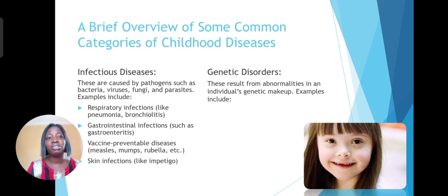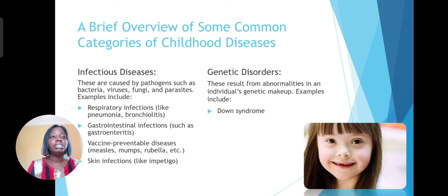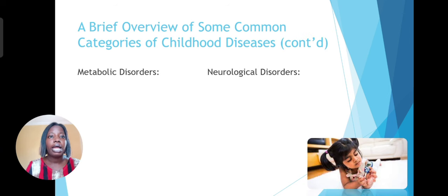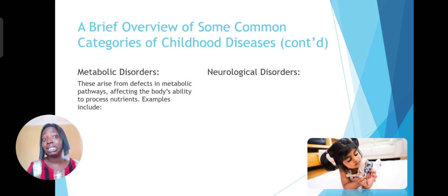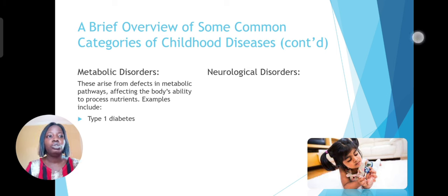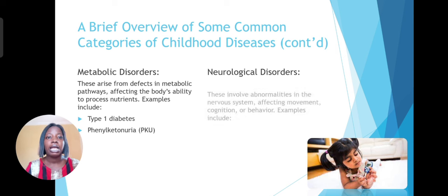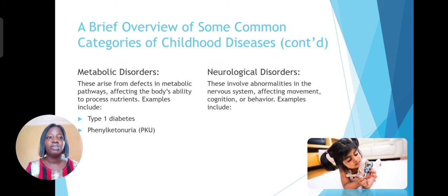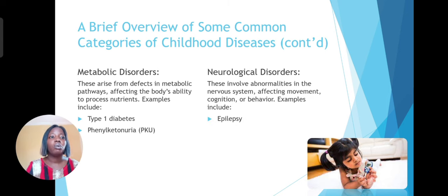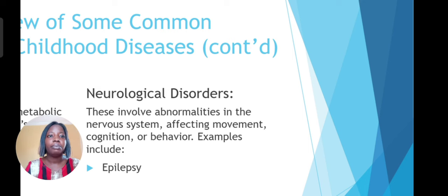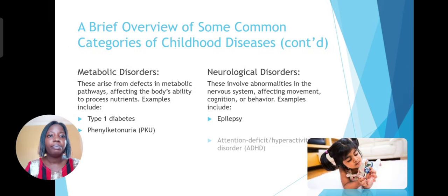Next we'll be looking at genetic diseases which result from abnormalities in individuals' genetic makeups and include Down syndrome, cystic fibrosis, and sickle cell anemia. We also have metabolic disorders which arise from defects in the metabolic pathways in the body — this has to do with the ability of the body to process nutrients — and we have type 1 diabetes. Under neurological disorders, which involves abnormalities in children's nervous systems, we have common ones such as epilepsy and ADHD.